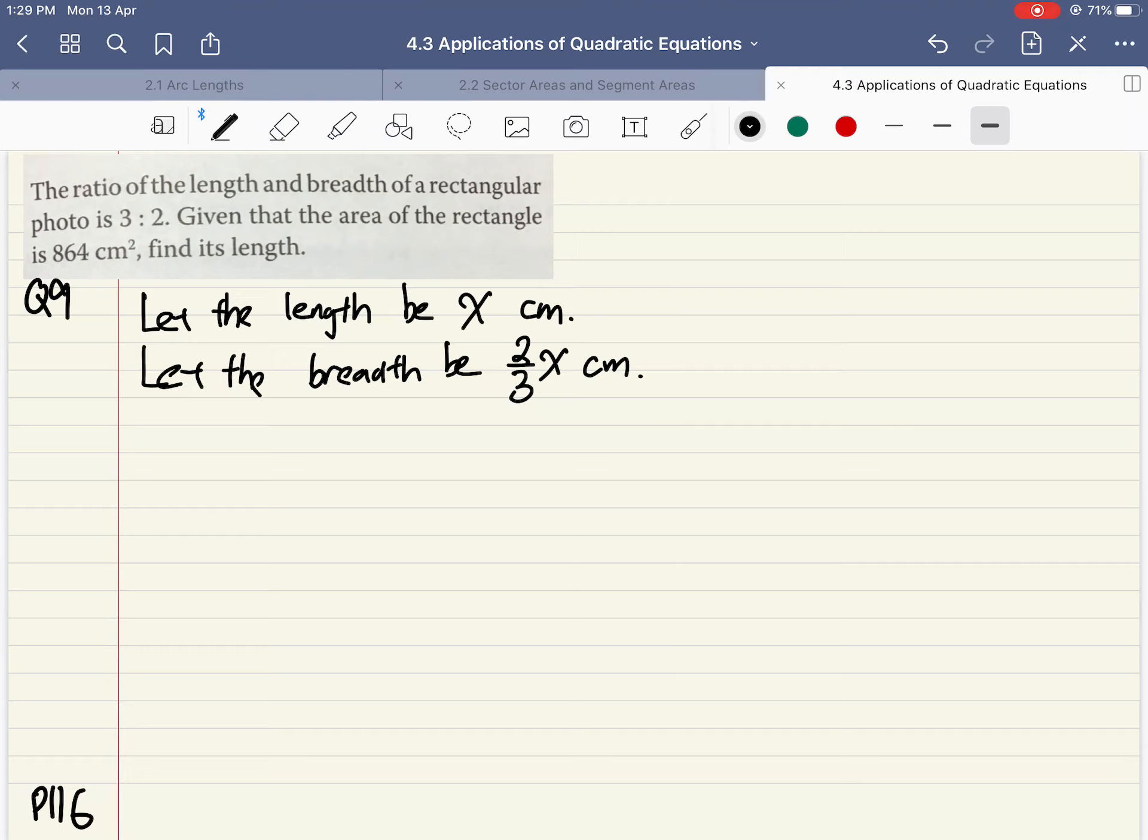Now that we know the area is 864 cm squared, let me form an equation. Area is length times breadth equals 864 cm squared.